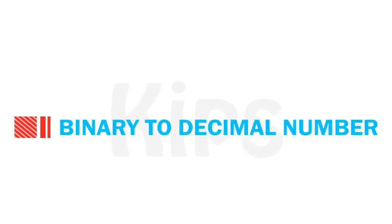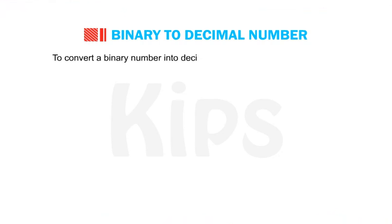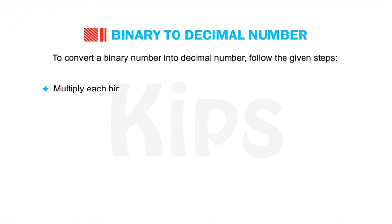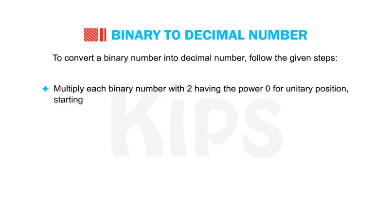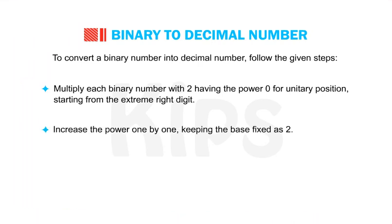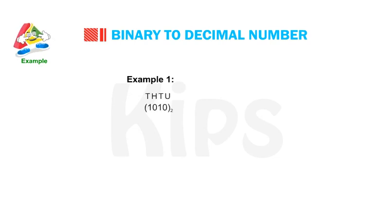Now we shall learn how to convert from a binary number to a decimal number. To convert a binary number into a decimal number, follow these steps: multiply each binary digit by 2 raised to the power 0 for the units position, starting from the extreme right digit; increase the power one by one keeping the base fixed as 2; then sum up all products to get the decimal number.